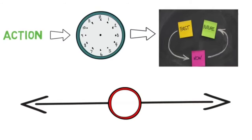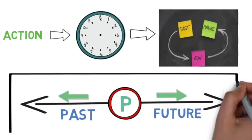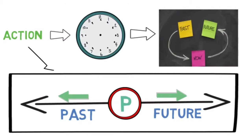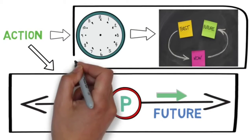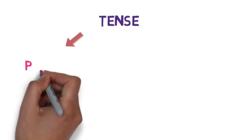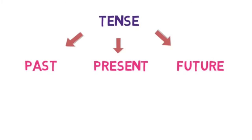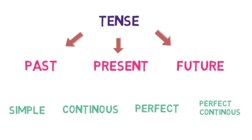Children, look at the timeline carefully. The circle represents the present tense. The line to the left of the circle is the time which is already past, and the line to the right of the circle is the future time. Please understand this timeline properly, children, as we are going to use it to understand when any action took place. Each of these three types has four subtypes: simple, continuous, perfect, and perfect continuous.